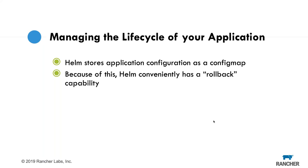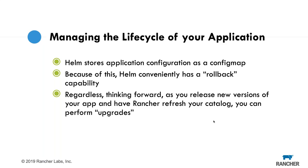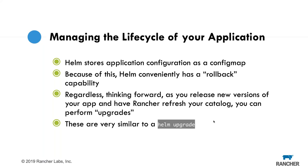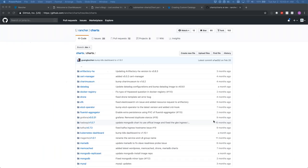Thinking forward, as you release new versions of your app and have Rancher refresh your catalog, you can perform upgrades. Something to be aware of: when you do helm install with --set to set all your variables and then do a helm upgrade trying to reuse existing variables, it doesn't really work that well. We recommend you use --set again or come up with a values.yaml to force those values into place.